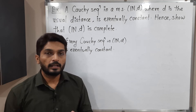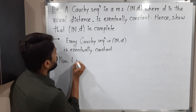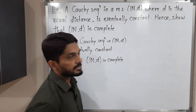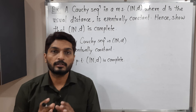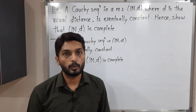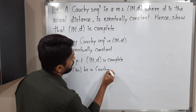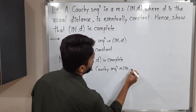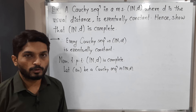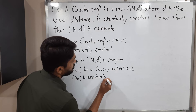So the first half of this example is done. Let us prove the second half. We have to prove that N, D is complete. When we say the metric space is complete, every Cauchy sequence must be convergent. So we take any arbitrary Cauchy sequence and prove it is convergent. Let An be a Cauchy sequence in N, D. But just now we proved every Cauchy sequence in N, D is eventually constant. So this Cauchy sequence is also eventually constant.